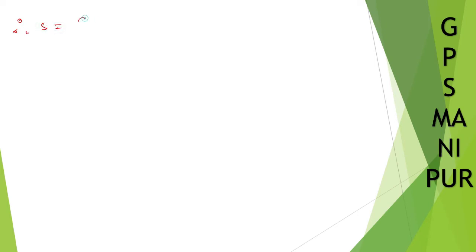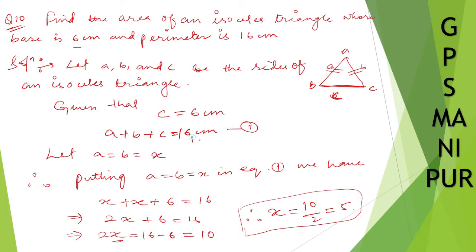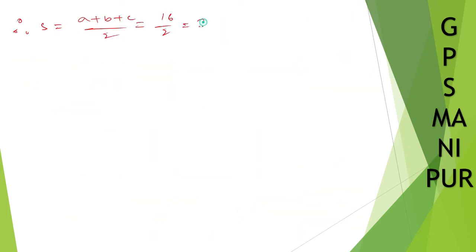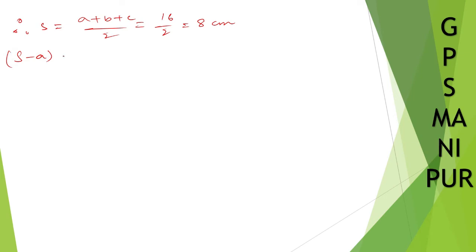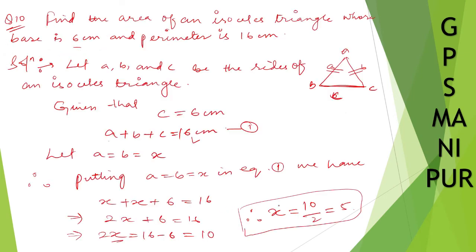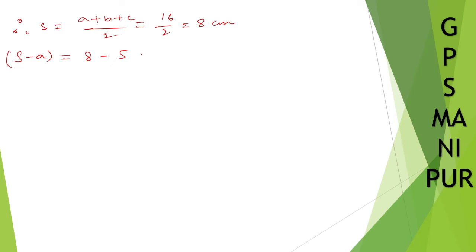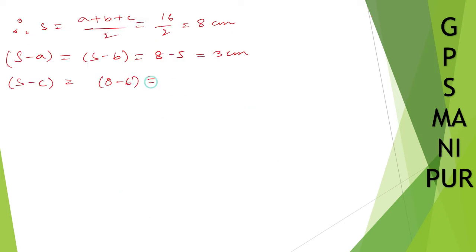S is equal to A plus B plus C divided by 2. A plus B plus C is given by the perimeter, that is 16, so 16 divided by 2 equals 8 cm. Now S minus A and S minus B will be equal, which is 8 minus 5, equal to 3 cm. And S minus C is equal to 8 minus 6, which is 2 cm.